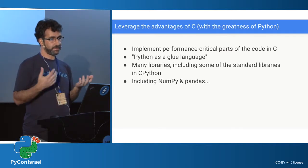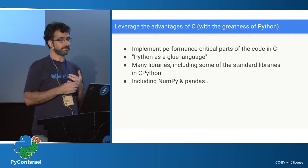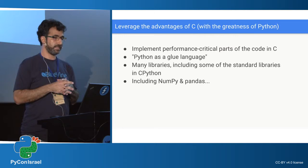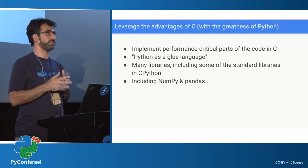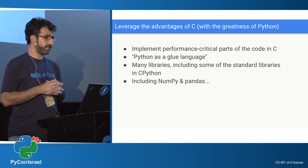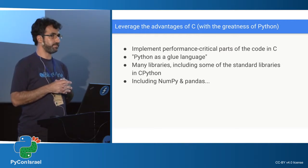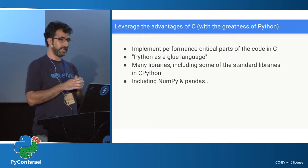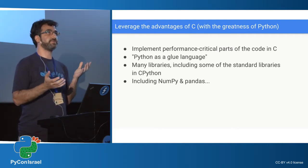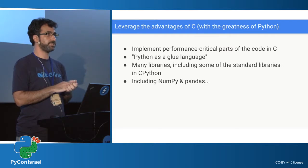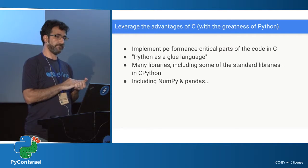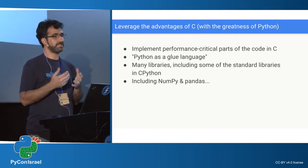Python enables us to extend these optimized specialized features by implementing some of our code in C, a language that is closer to the machine. Many libraries, including some standard libraries in CPython, and of course NumPy and Pandas, are heavily — mostly — written in C. In that regard, sometimes people see Python as a glue language: you write your high-level code in Python, and the implementation itself is actually running in C. Pandas is based on NumPy, and NumPy's basic data structure is the array.